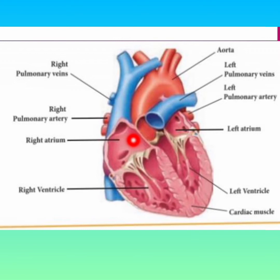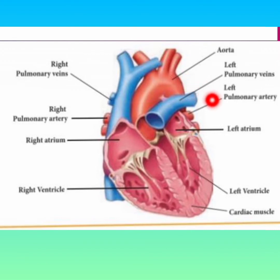The right side of the heart receives the deoxygenated blood. We have oxygenated and deoxygenated blood — oxygenated is pure blood, deoxygenated is impure blood. The right side of the heart receives deoxygenated blood and pumps it to the lungs. The left side of the heart receives oxygenated blood and pumps it to various parts of the body. Here, the blue color is the oxygenated blood.